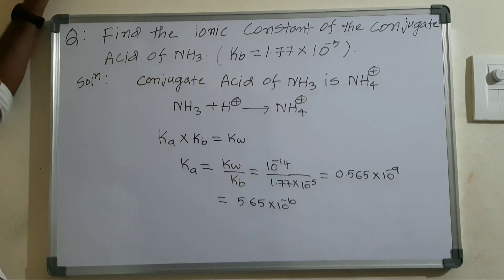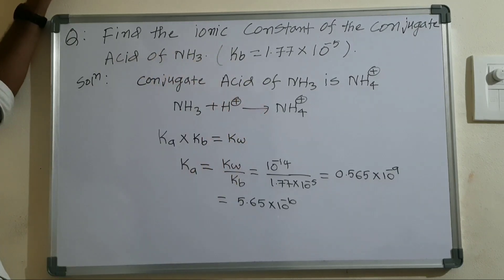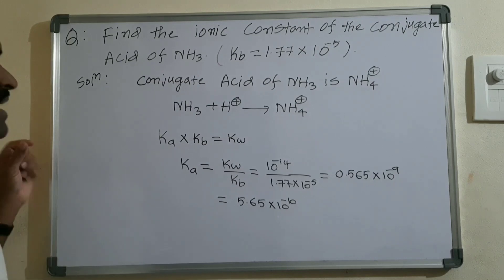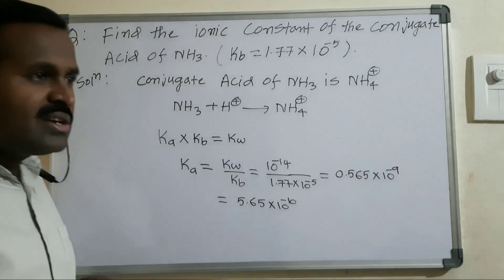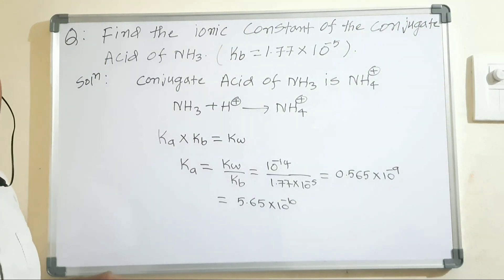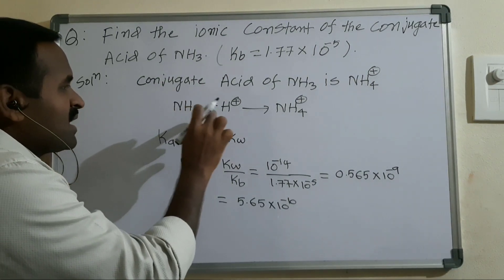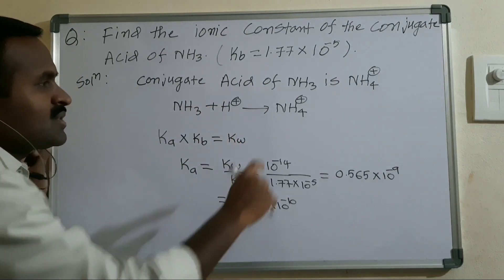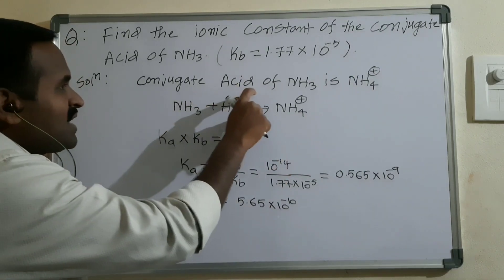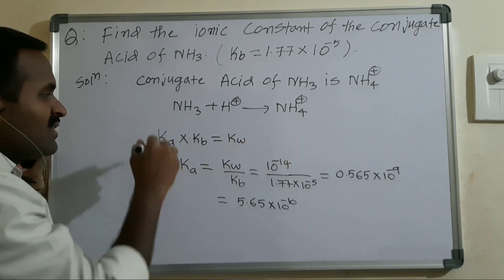The next problem: find the ionic constant of the conjugate acid of ammonia, given Kb = 1.77 × 10⁻⁵. To find the conjugate acid, we add one proton to NH₃, giving NH₄⁺. So the conjugate acid of NH₃ is NH₄⁺.